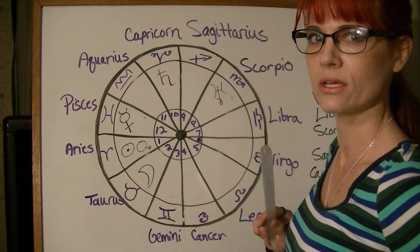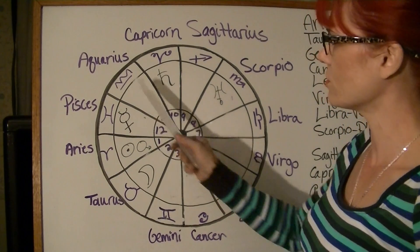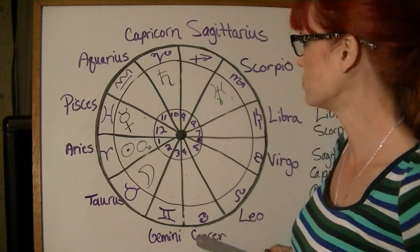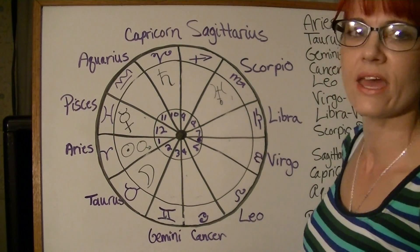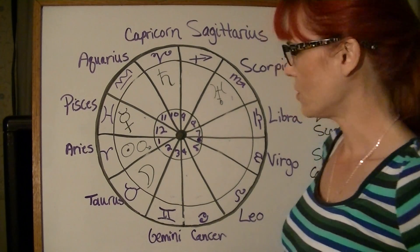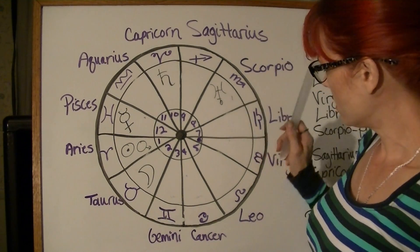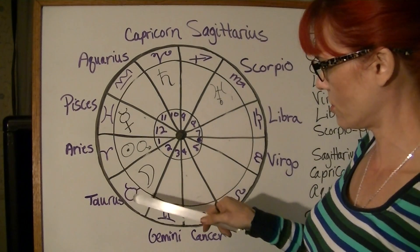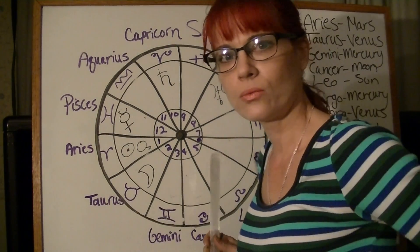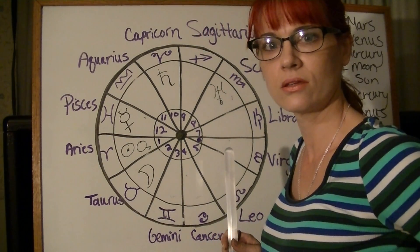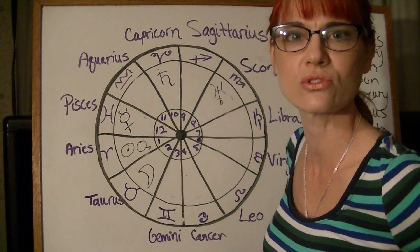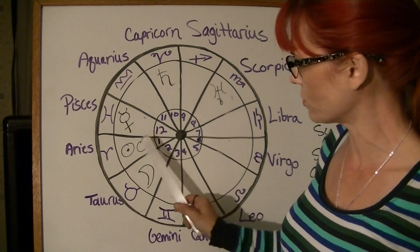Where is the ruler of the 11th house? The rulers are Uranus and Saturn. Uranus is in the eighth house in Scorpio, and Saturn is in the tenth house in Capricorn. Where is the ruler of the second house? Taurus is ruled by Venus, and Venus is in the first house with the Sun — which is also the ruler of the fifth house. So we have the second house ruler and the fifth house ruler conjunct in Aries in the first house.